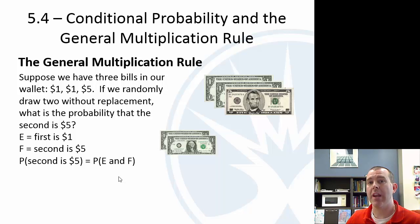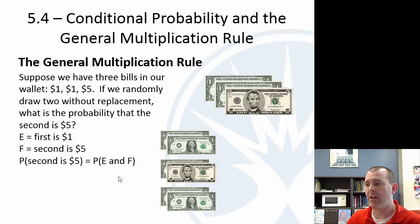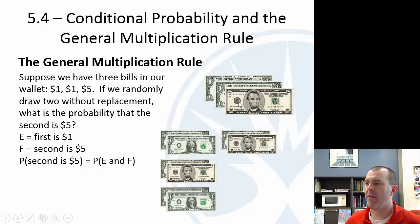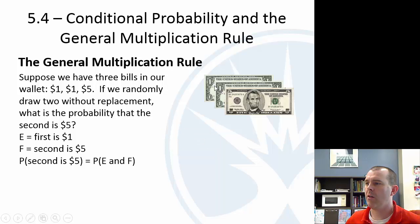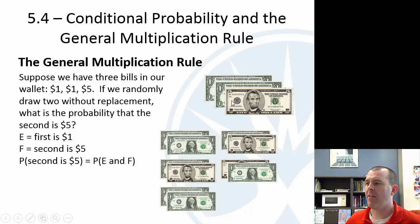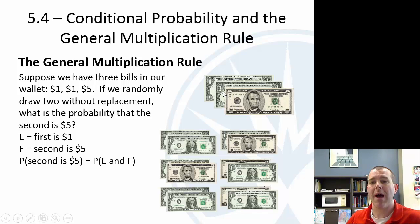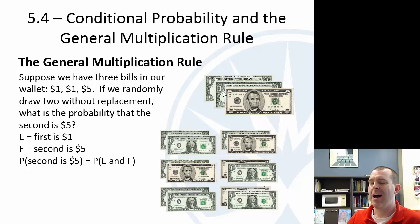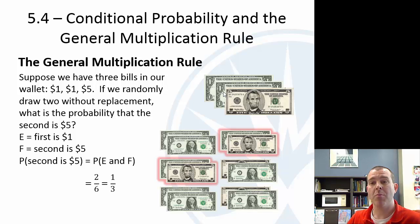Let's think about all the different options. Drawing in order, the six possible outcomes are: $1–$1, $1–$1, $1–$5, $1–$1, $1–$1, and $5–$1 (using the two distinct $1 bills and one $5). Of those six possibilities, two of them have a $5 as the second draw. So that probability is two out of six, or one-third.